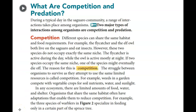What are competition and predation? During a typical day in the saguaro community, a range of interactions take place among organisms. Two major types of interactions are competition and predation. Different species can share the same habitat and food requirements — for example, the flycatcher and the elf owl both live on the saguaro and eat insects. However, these two species do not occupy exactly the same niche; the flycatcher is active during the day while the owl is active mostly at night. If two species occupy the same niche, one may eventually die off — the reason for this is competition.